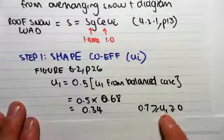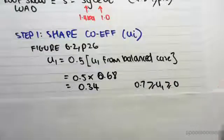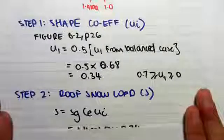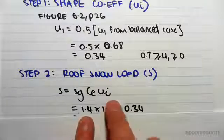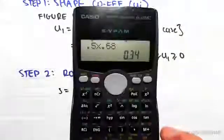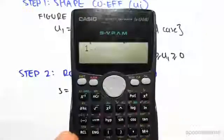So then all we do is we find the roof snow load s, which is going to be sg ce mu i. So 1.4 by 1 by 0.34, so 1.4 by 1 by 0.34 gives us 0.476, or 0.48 kPa.